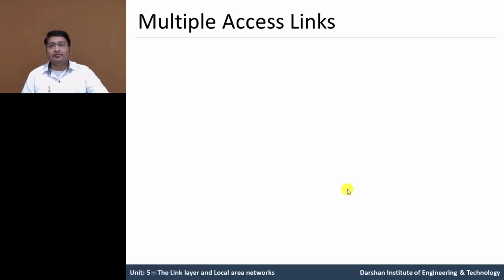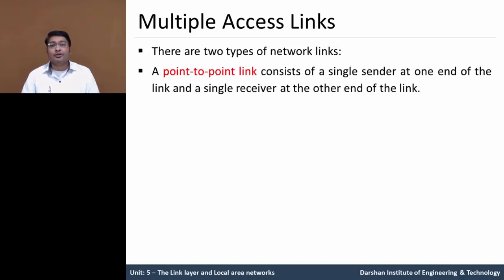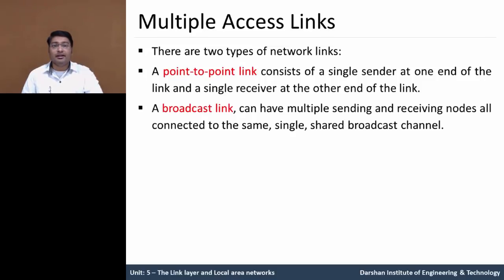In this topic, we have discussed about the different network links. We have two types of network links. The first one is a point-to-point link, which consists of a single sender at one side of the link and a single receiver at the other side of the link. This is point-to-point or peer-to-peer communication.